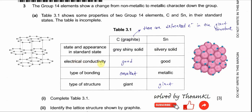For electrical conductivity, carbon — especially graphite — is a good electrical conductor. This is because carbon has delocalized electrons which can move along the layers. Graphite has a layered structure; each layer is a giant covalent network, and along these layers there are delocalized electrons, so it can conduct electricity.